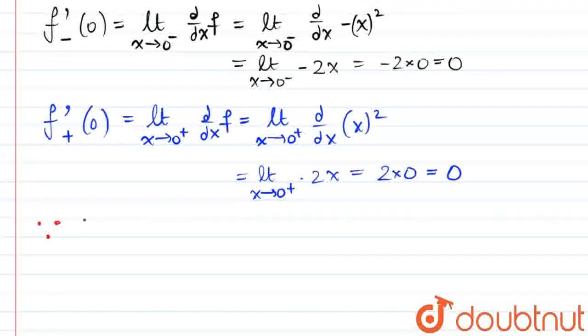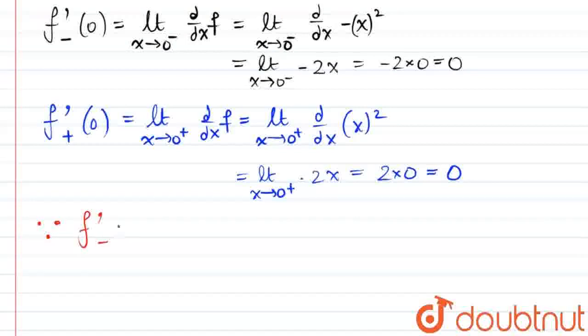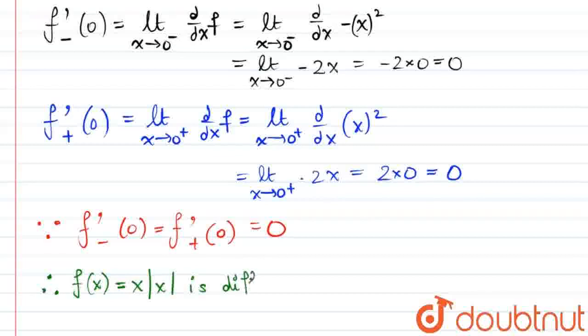Clearly, the left-hand derivative at 0 is equal to the right-hand derivative at 0, which is equal to 0. Hence, we can conclude that the function f(x) equals x mod x is differentiable at the point x equals 0. Thank you.